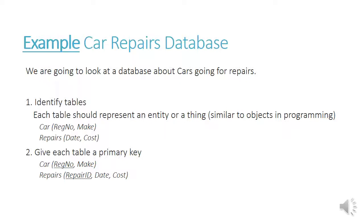The car repair database — this is all about cars going for repairs. If we identify the tables, the two things involved here are cars and repairs. Each table must represent an entity or a thing. So the car table will have registration number and make, and in the repairs table we'll have date and cost. These are relations — that's the way they've been noted here.